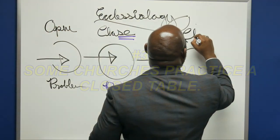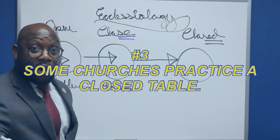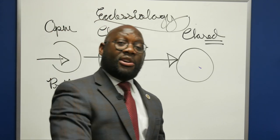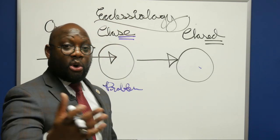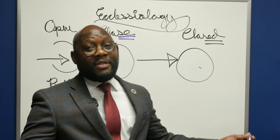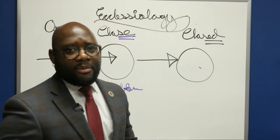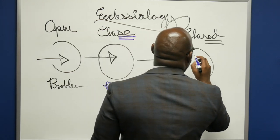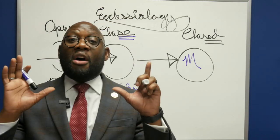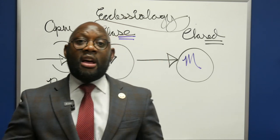The last position is the closed position — C-L-O-S-E-D, with a D at the end. So you have open table, which is the worst; close table, which has its problems; and then closed. I believe the closed position is the strongest position, though I don't believe it is without problems. The closed position requires that the individual must be a member of that local church. If you are not a member of that local church, you cannot partake of the Lord's Supper.